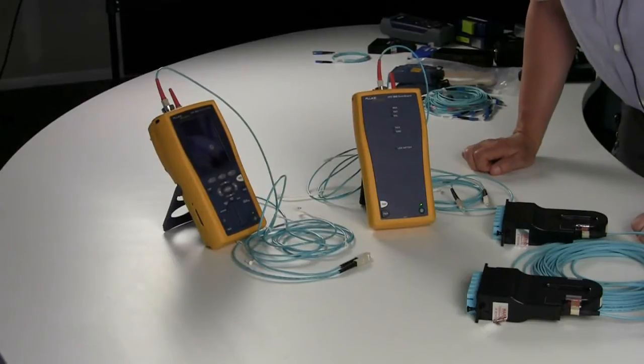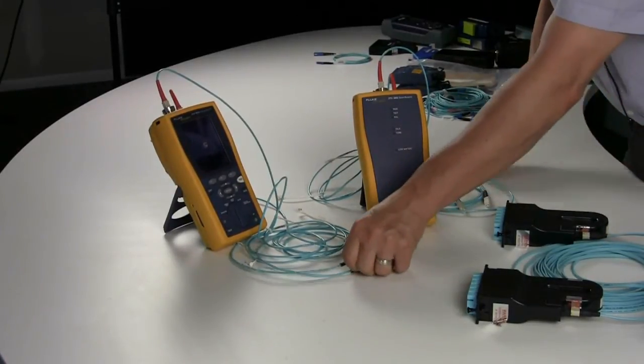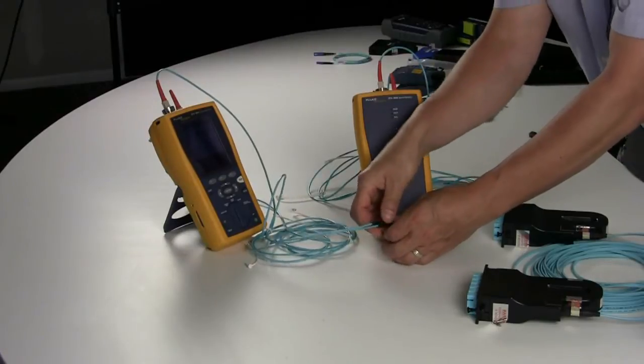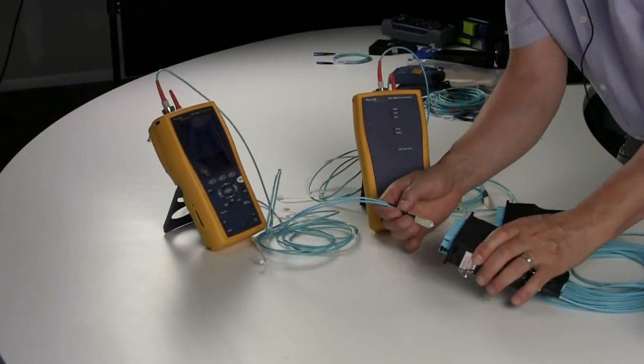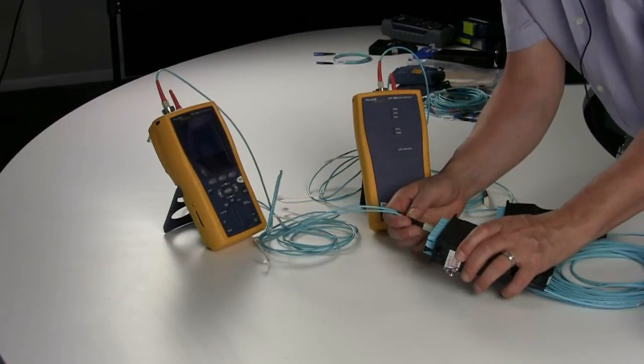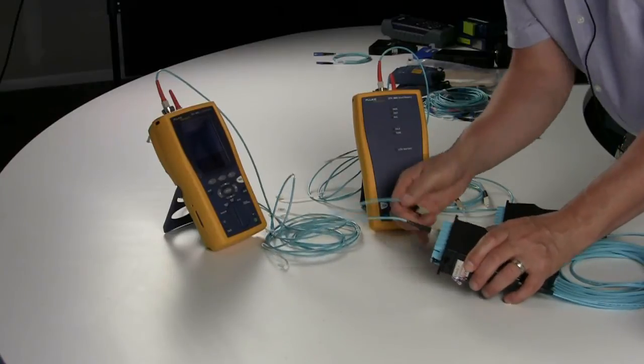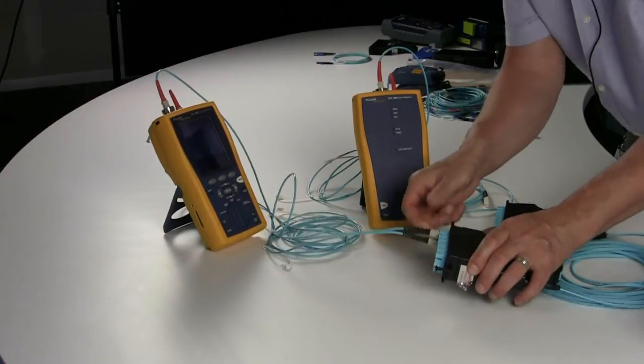After you qualify your reference cords, you take them out of the adapter, save your reference value so you ensure that you can qualify your cords if asked. Take your main controller to the one end of the link.